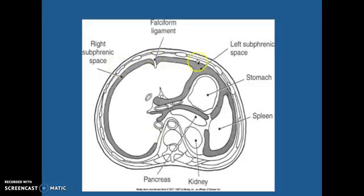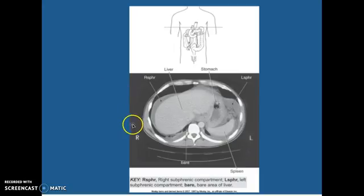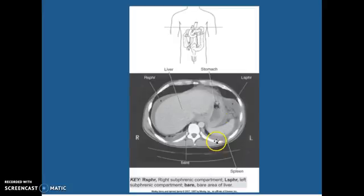Your falciform ligament with your subphrenic space, your stomach, your spleen, kidney. Here's your pancreas, and your right subphrenic space there. Stomach is here, left spleen, and here is your spleen, your liver, and right subsplenic space.